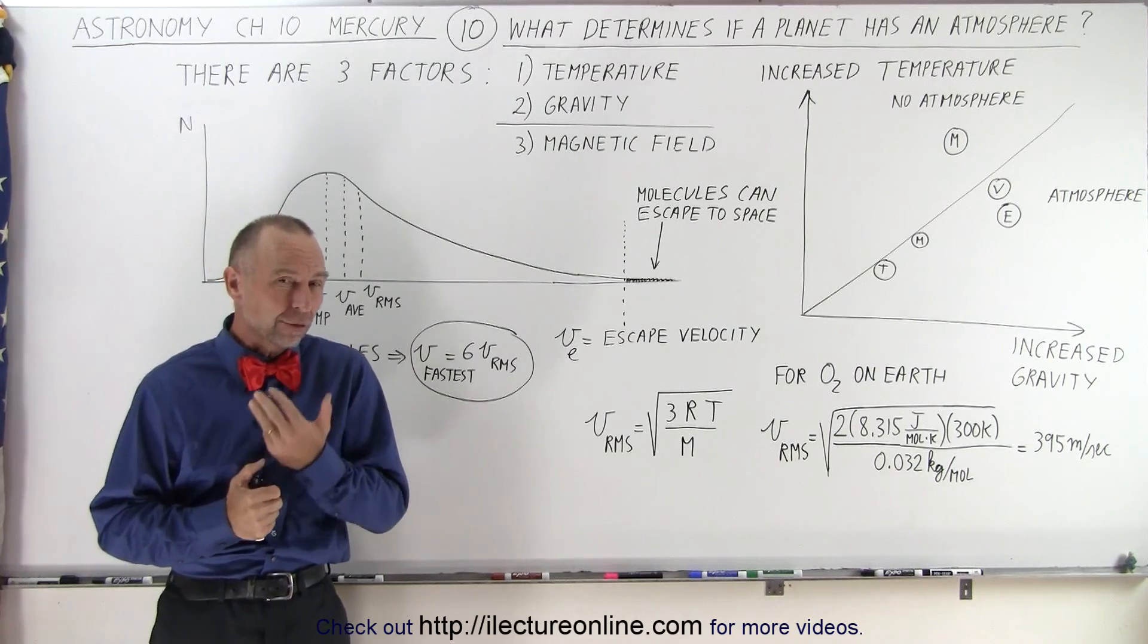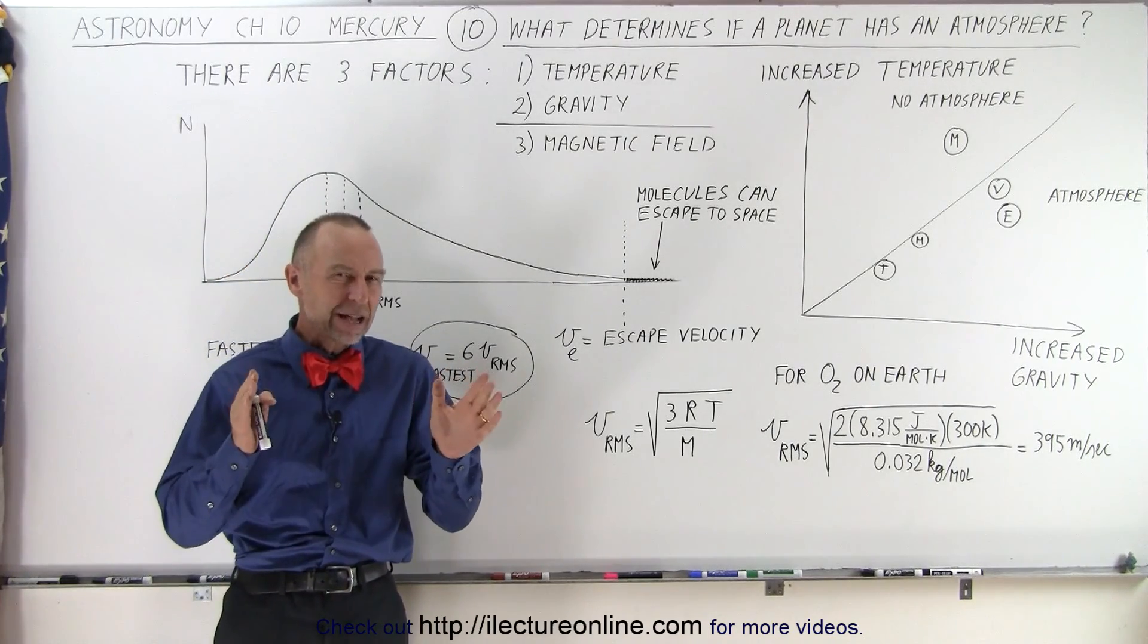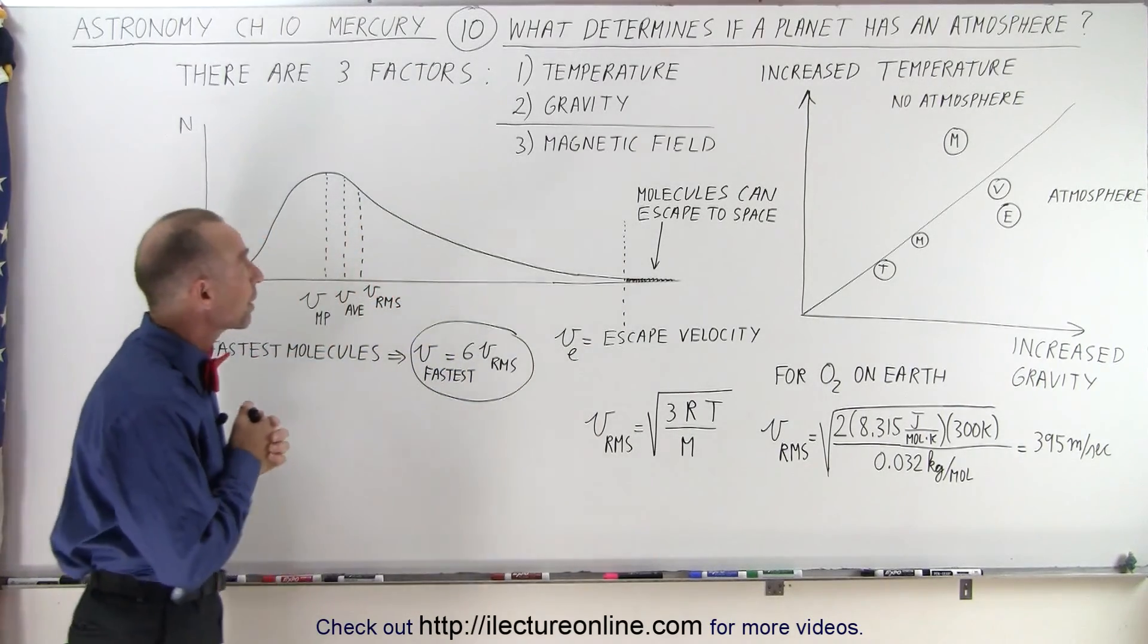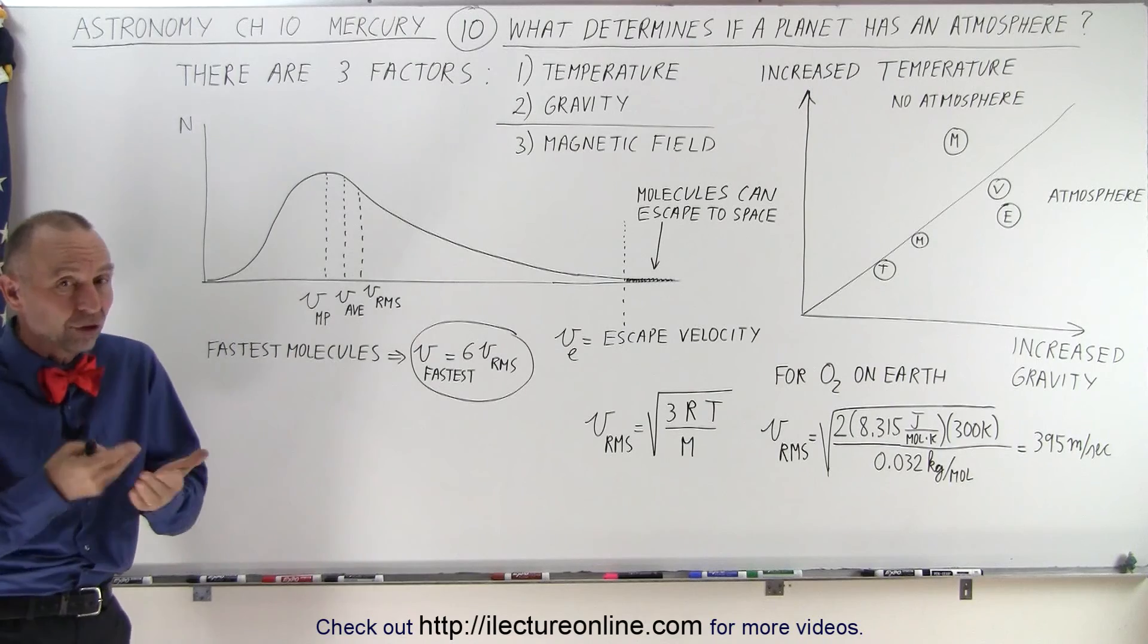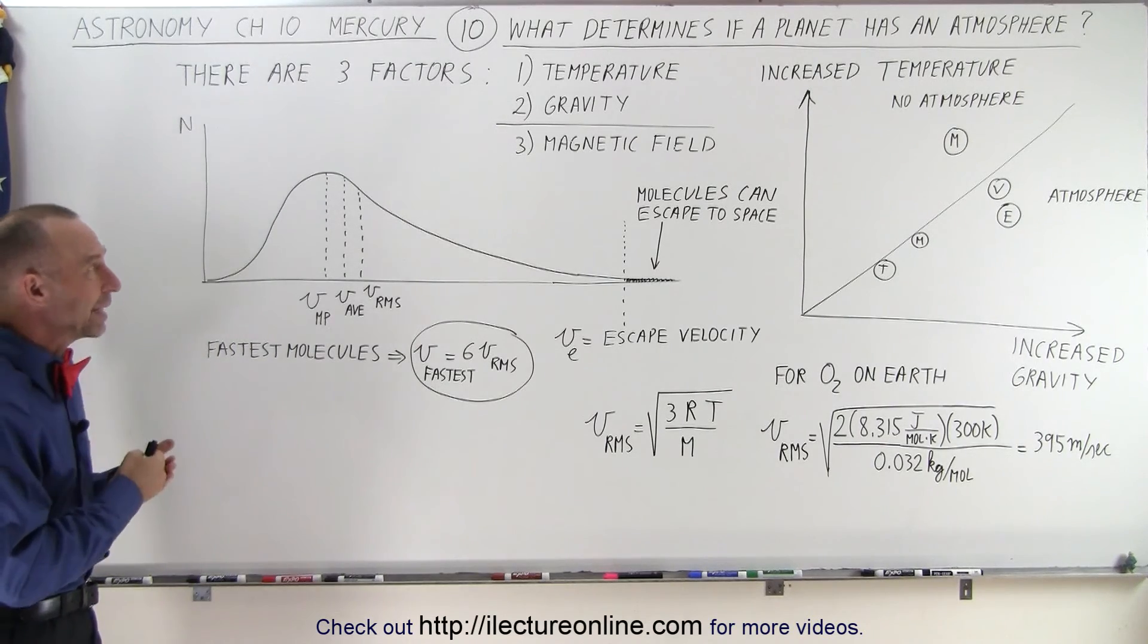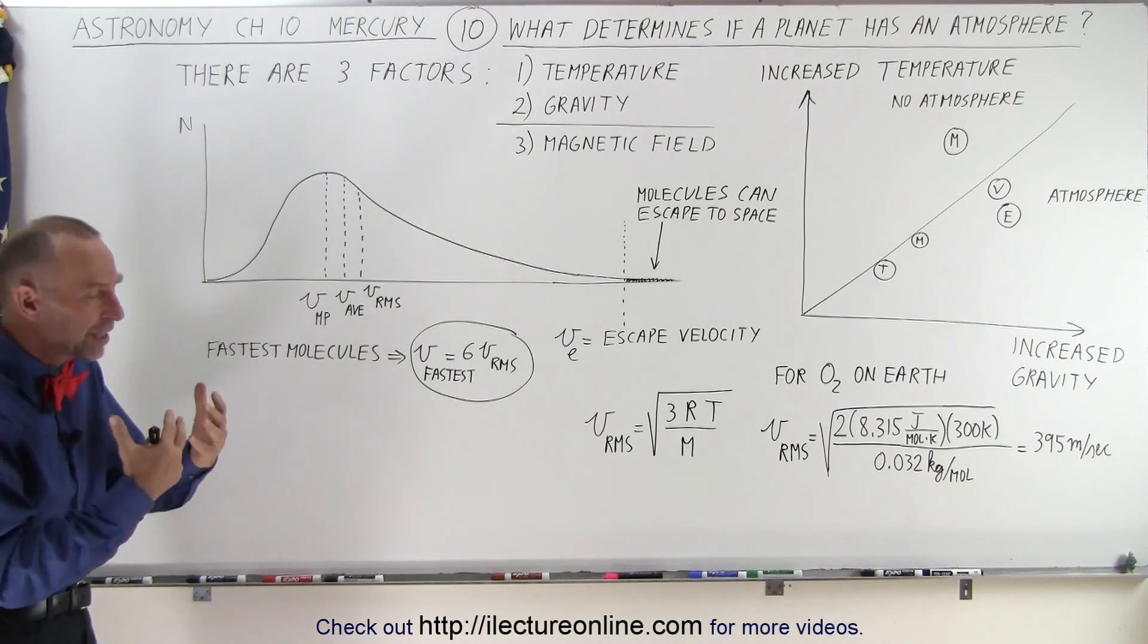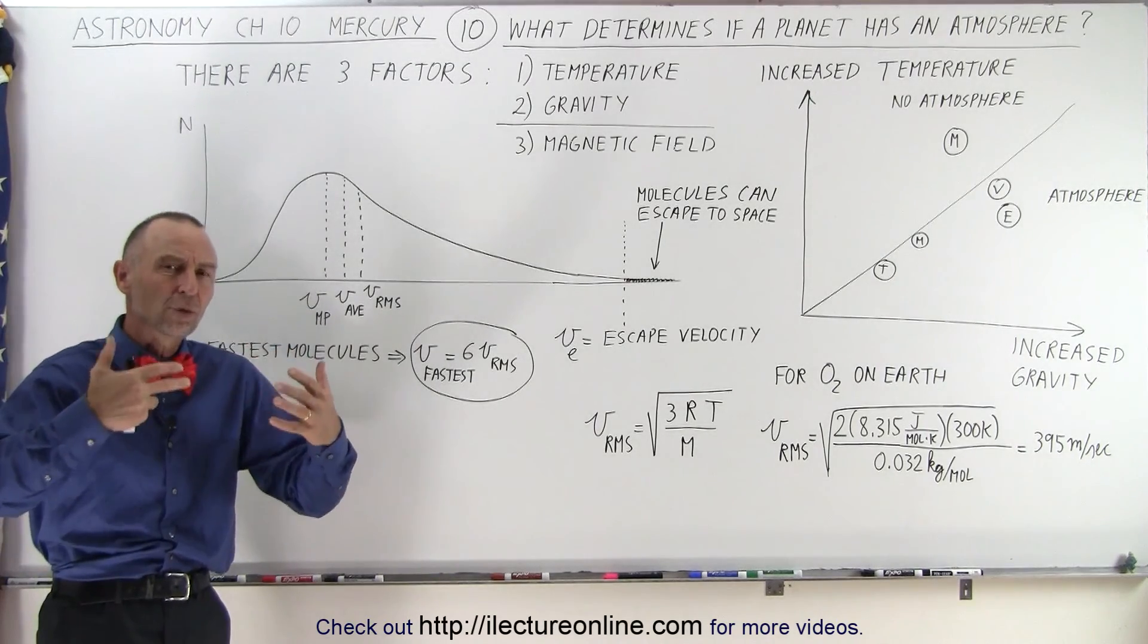Well, it turns out there are three factors. Two are the main factors, and then there's the third factor, and all three do play a role in the case of Mercury. The two main factors are temperature and gravity. The third factor is whether or not the planet has a magnetic field so they can be protected from the solar wind.